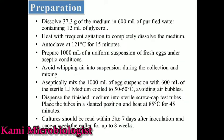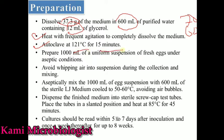To prepare this media: first weigh 37.3g of LJ media powder and mix it into 600ml distilled water containing 12ml glycerol. Mix all ingredients by heating at 60–80°C. After that, autoclave the media at 121°C for 15 minutes. Once autoclaved, add 1000ml of fresh egg suspension and avoid air bubbles while mixing. Then cool the media down to 50–60°C and avoid bubble formation.